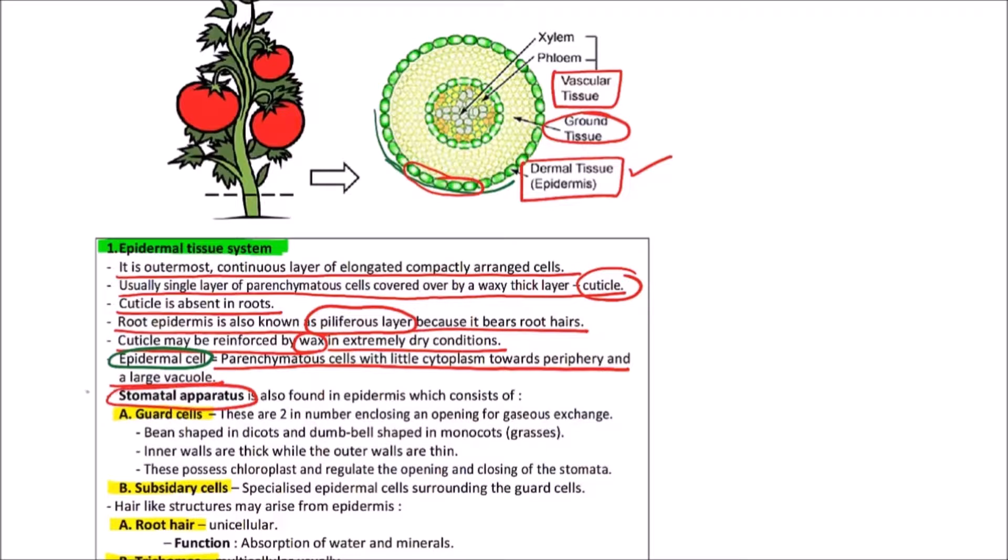It is having two major types of cells. First one is guard cell, another one is subsidiary cells. Guard cells are two in number and enclosing an opening for gaseous exchange which is known as stoma or stomata, bean shaped in dicots and dumbbell shaped in monocots.